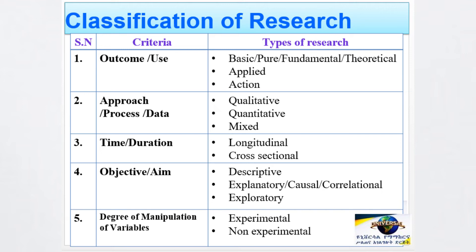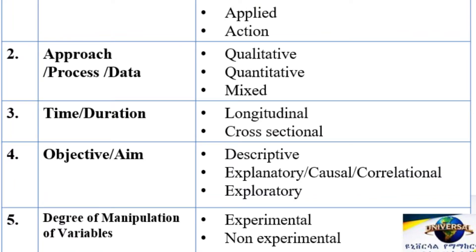The second classification of research is based on the approach, the nature of data, as well as the research process. Based on the approach or nature of data, research can be classified into qualitative, quantitative, and mixed kinds of research.